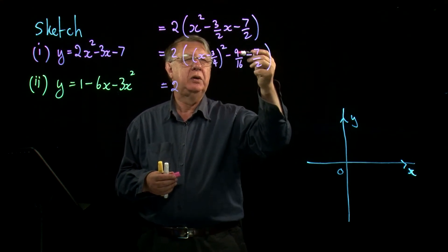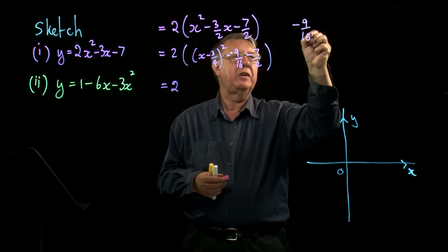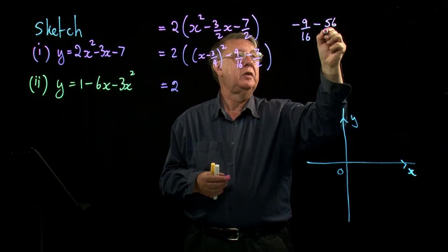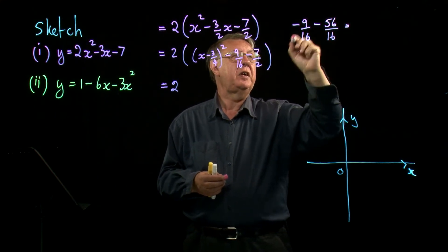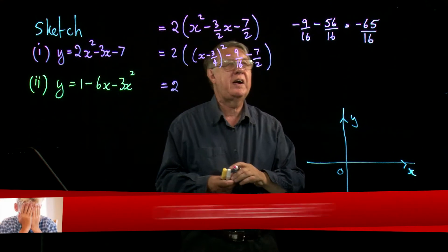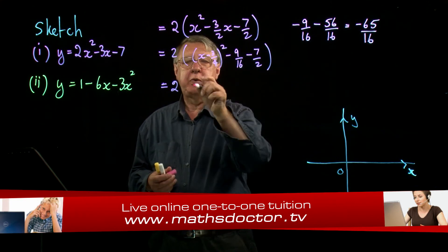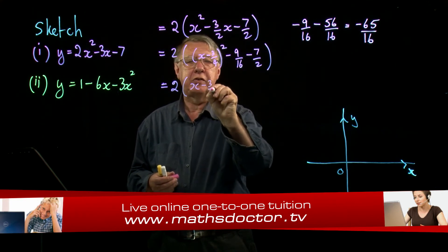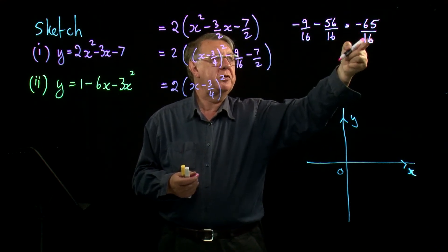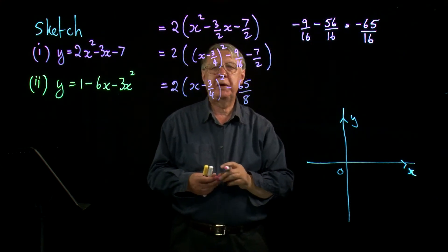You need to be confident with the fractions here. We need a common denominator of 16. So we need 9 over 16, and we need to multiply top and bottom of 7 over 2 by 8, giving 56 over 16. Then 56 and 9 is 65 over 16. Remember, you probably haven't got a calculator in this exam. So when I multiply the 2 back out, I have 2 times (x minus 3 quarters) squared, and multiplying through by 2 makes the bottom line 8.